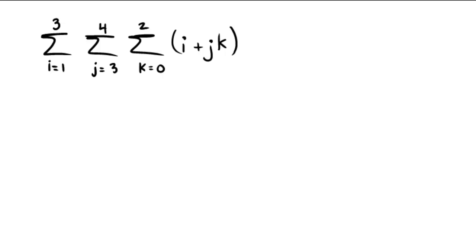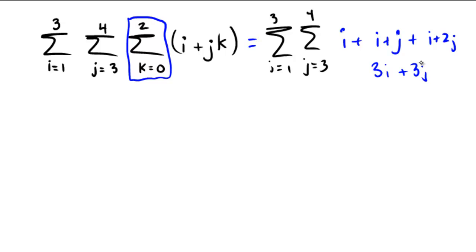So assuming you gave this a shot and paused the video, I'm going to use the same color coding as I did last time. And we're going to do this one first. So I got a sum i equals 1 to 3, sum j equals 3 to 4. And if I substitute k equals 0, I end up getting just an i. k for 1 would give me i plus j. And k for 2 would give me i plus 2j. So summing these up, it looks like 3i's and 3j's.